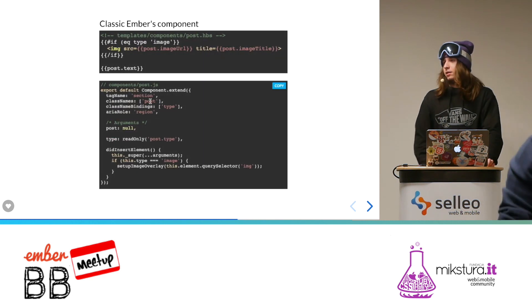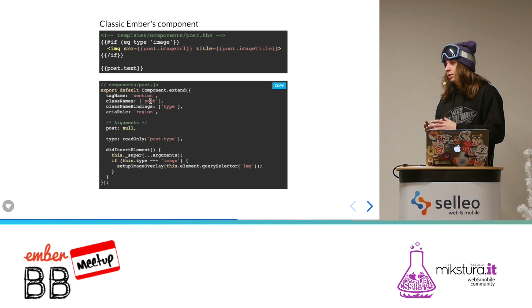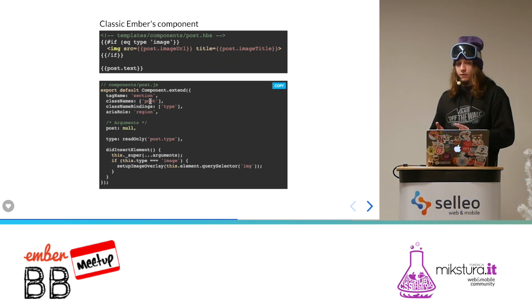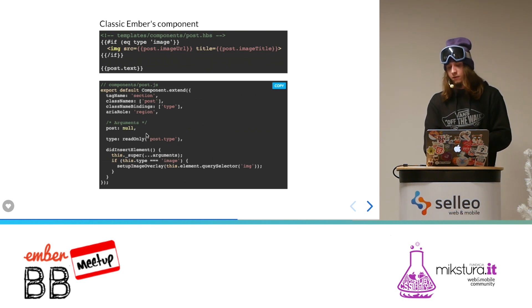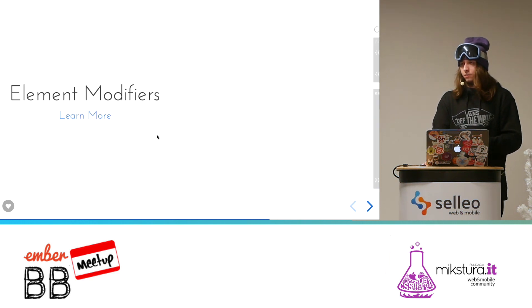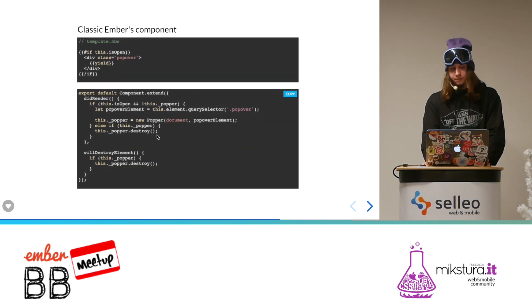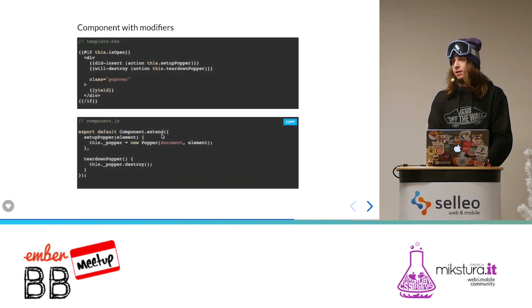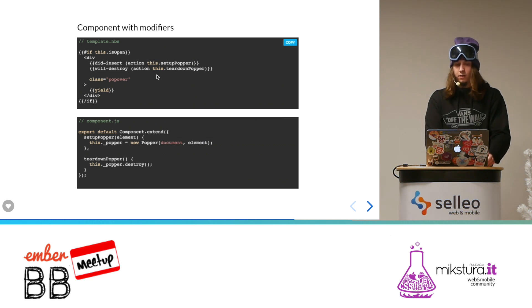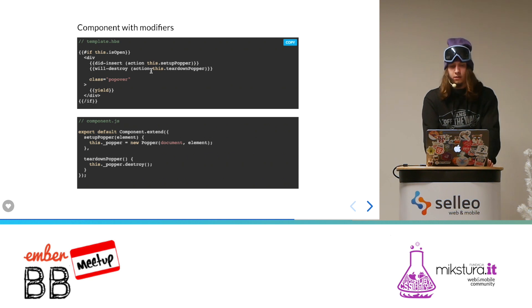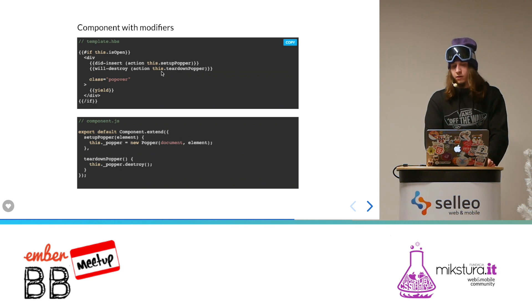In the old syntax, every component had its own outer HTML wrapper div, and hooks were always bound to that div. But with Glimmer components there is no outer wrapper div, so everything lands in the template. I really like this syntax because it's much clearer — when we see the template we can almost instantly see that after insert some action runs, and after destroy some other action runs.